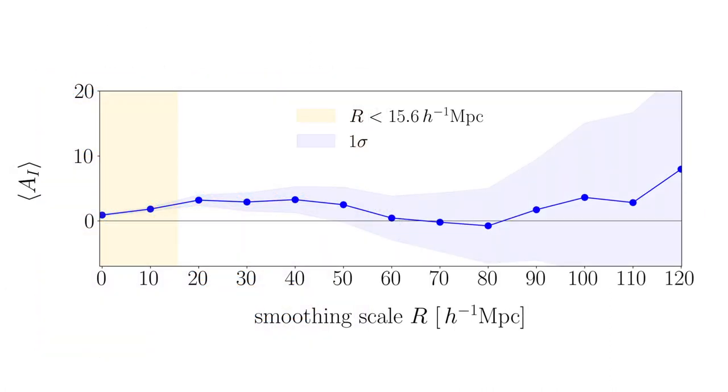We jointly infer the amplitude of intrinsic alignment and random noise and find 4-sigma evidence of intrinsic alignment at 30 megaparsecs. In this plot, you see the amplitude of intrinsic alignment as a function of scale. The yellow window represents scales smaller than the original resolution of our tidal fields.